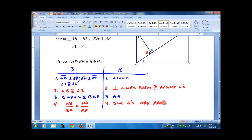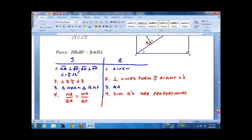And I've already forgotten what I wrote on the other page. Something about similar triangles are proportionate. Proportional, alright. And then what we came for. HR times BF equals BA times HA. Property of proportions.